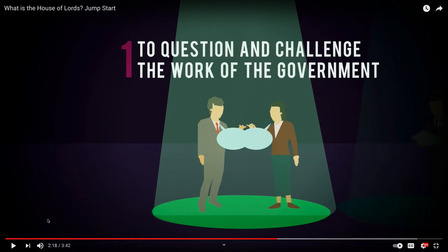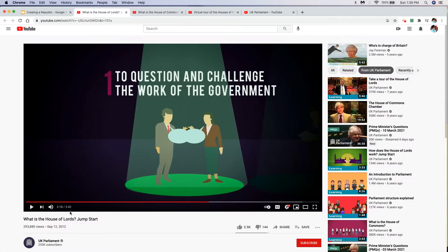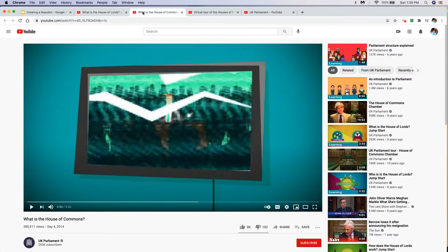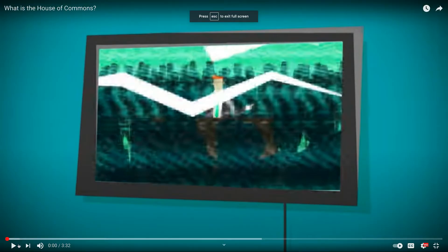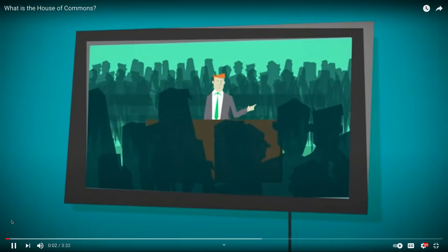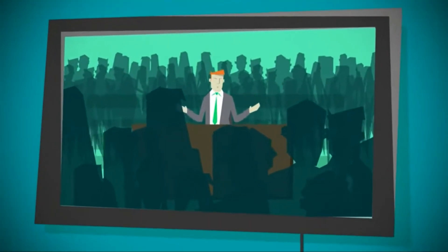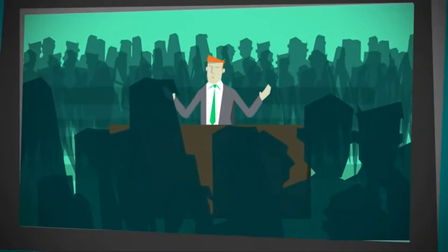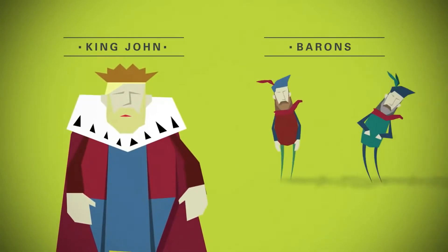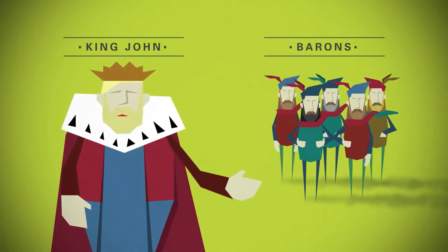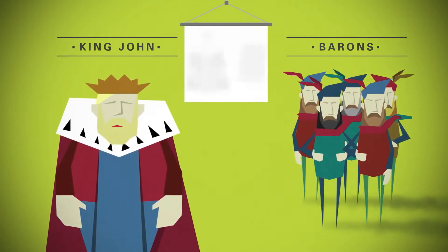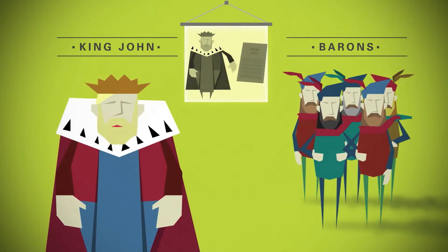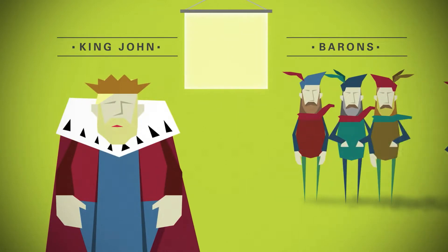Now switching over to the House of Commons, which also goes through its history. Before the House of Commons or the House of Lords, there was just the king and his barons. The king could call them whenever he wanted, but he didn't count on them becoming powerful. In 1215 they made King John seal the Magna Carta, which forced him to obey the law and set up an advisory council of 25 men.